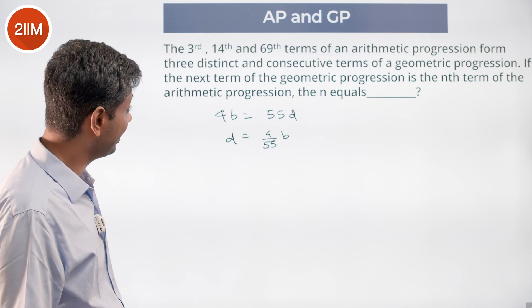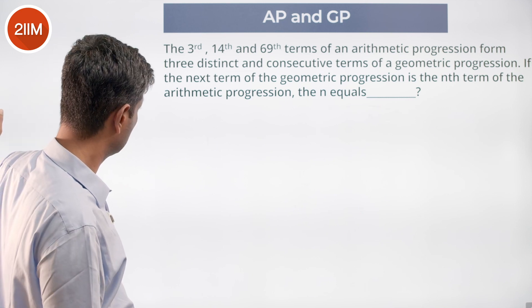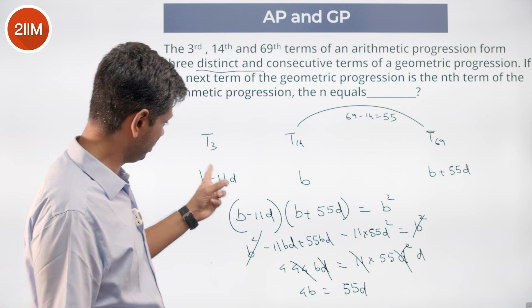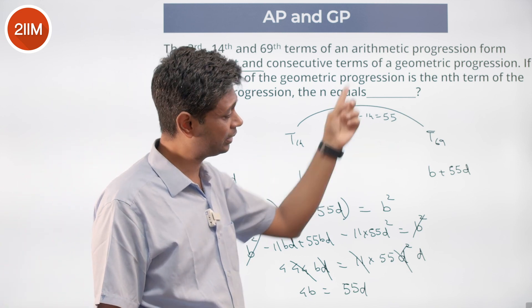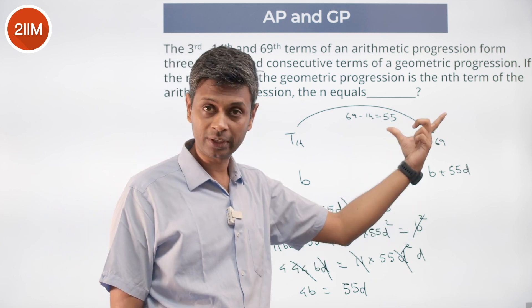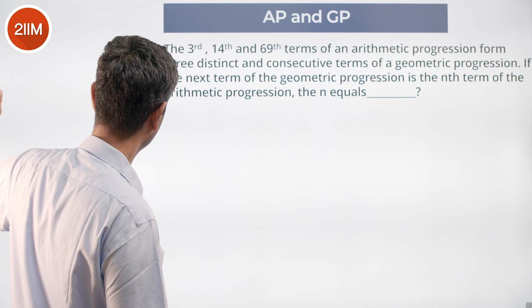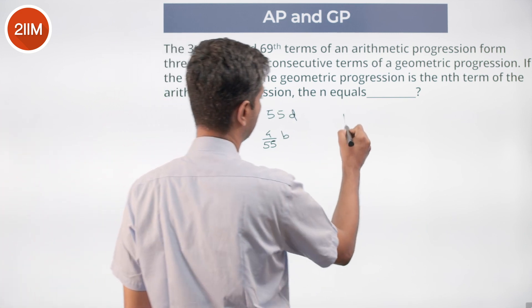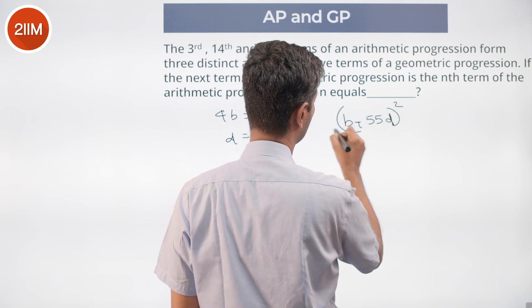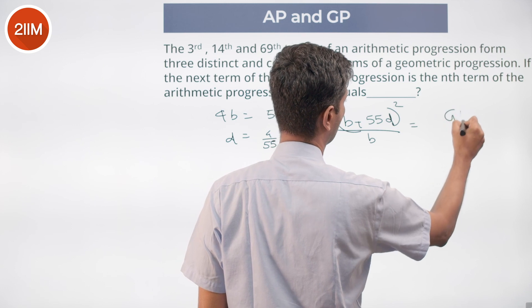The next term of the geometric progression. This, this, this and the term after that. It is b plus 55d whole square by b. So looking for b plus 55d whole square by b. This is the fourth term of the geometric progression.